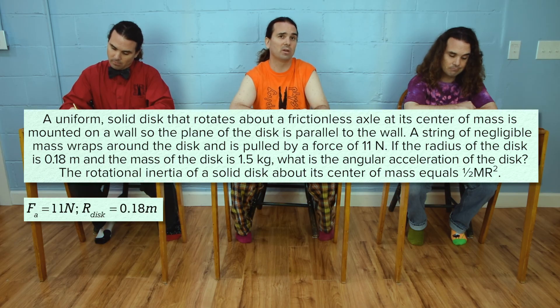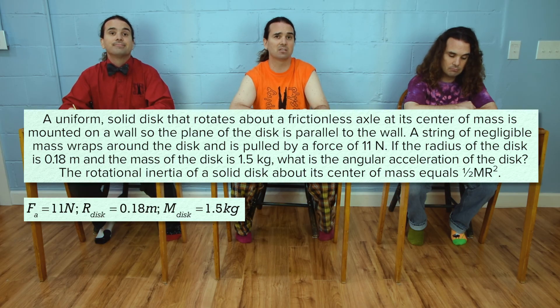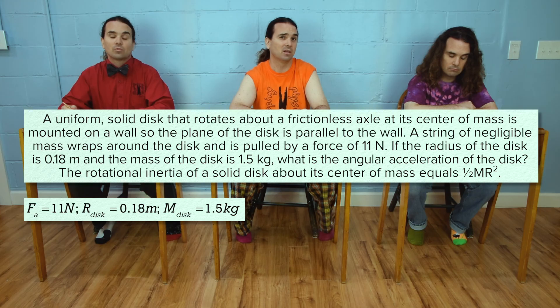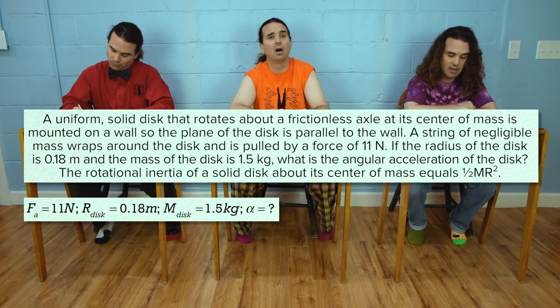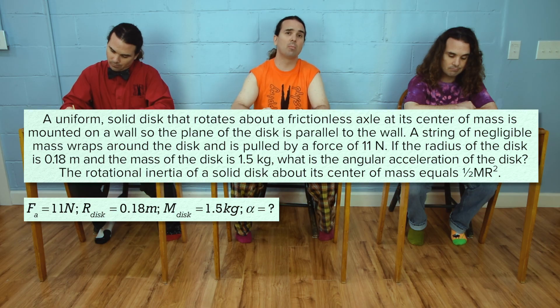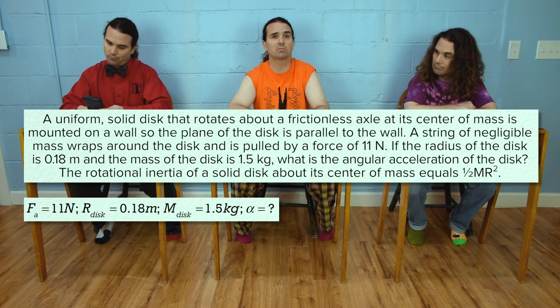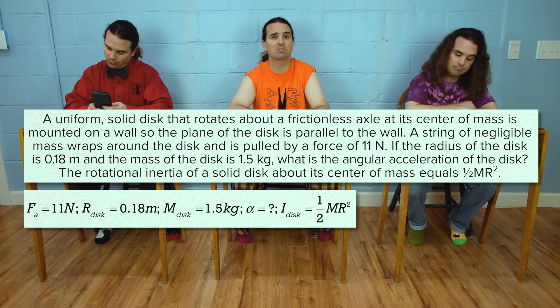Radius of disk is 0.18 meters, mass of disk is 1.5 kilograms, and angular acceleration equals question mark. The rotational inertia of a solid disk about its center of mass equals one half mass times radius squared.